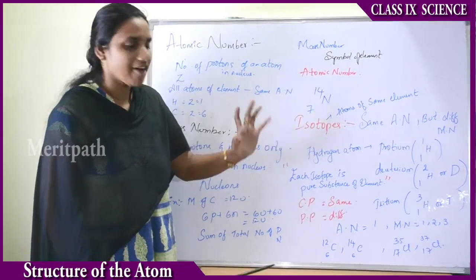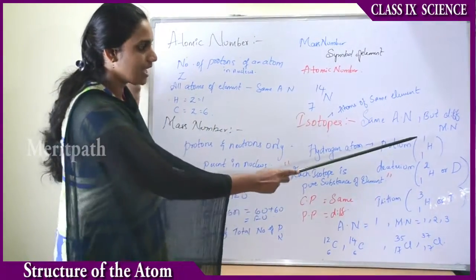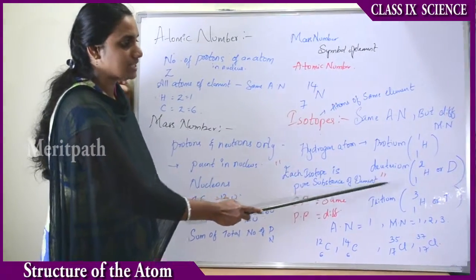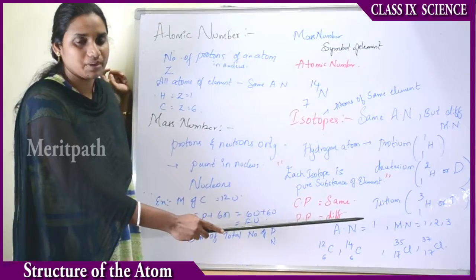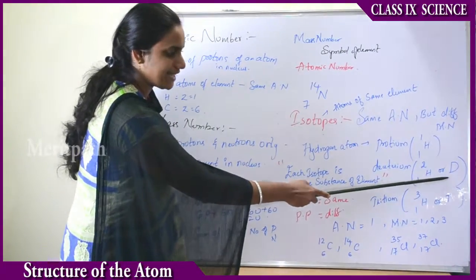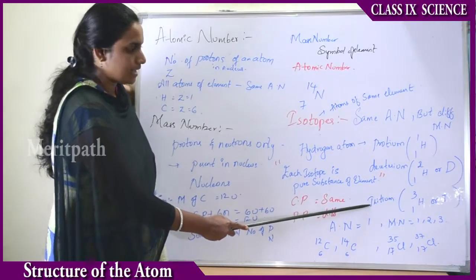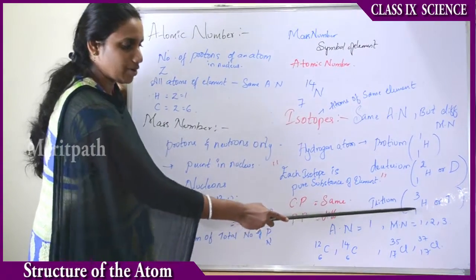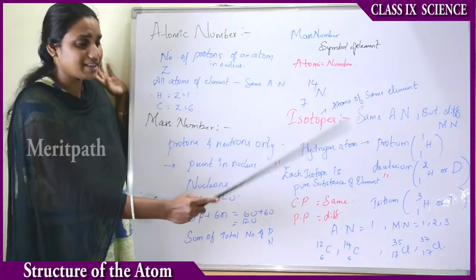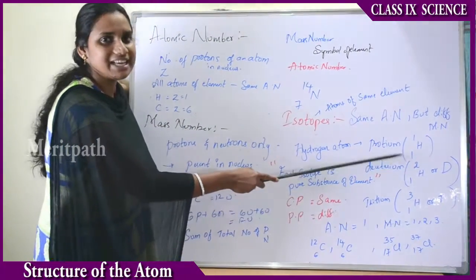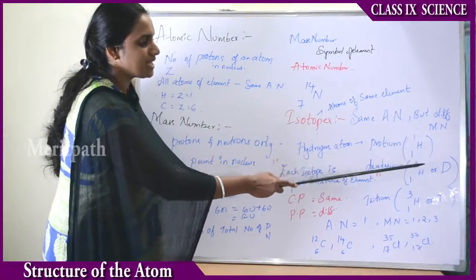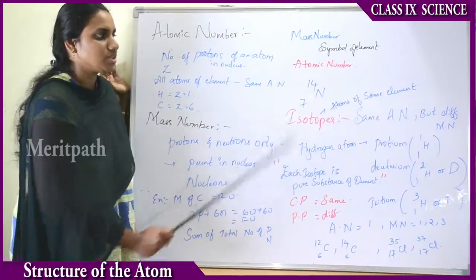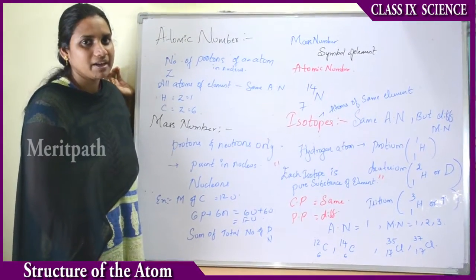Protium has atomic number 1 and mass number 1, represented as ¹H₁. Deuterium is represented as ²H₁ — mass number 2 and atomic number 1. Tritium is represented as ³H₁ — mass number 3 and atomic number 1, and can also be denoted as T. We can see that the atomic number is the same for each isotope, but the mass number changes: 1, 2, and 3. Therefore, isotopes have the same atomic number but different mass numbers.